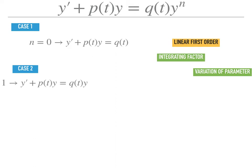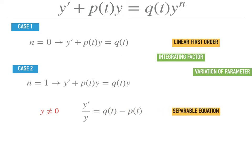In the case when n equals 1, the equation becomes y prime plus p of t y equals q of t y. If y is not 0, then you can divide the whole equation by y to get a separable equation. And we know how to solve a separable equation just by integrating both sides to solve for y.